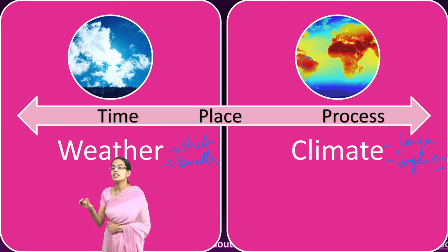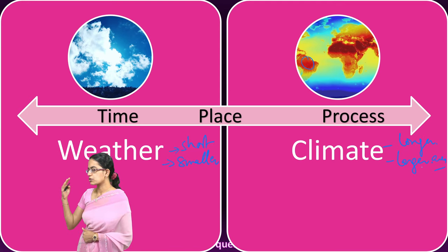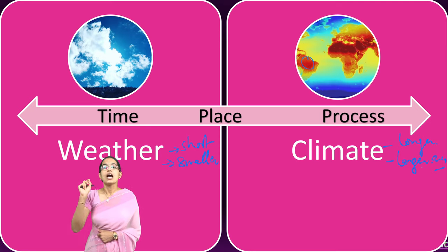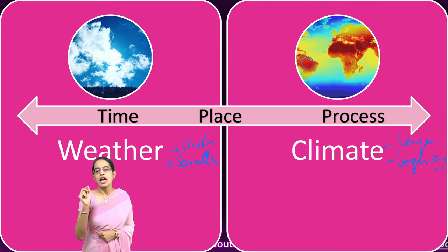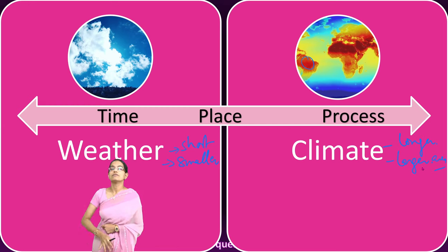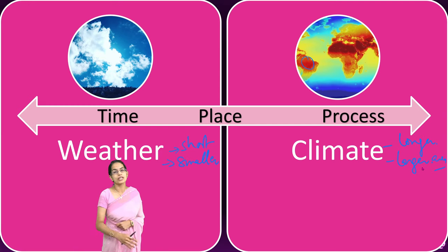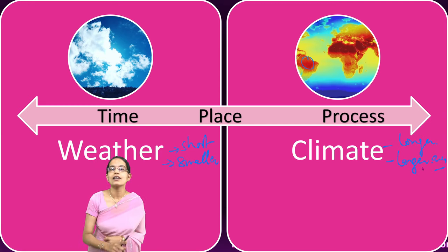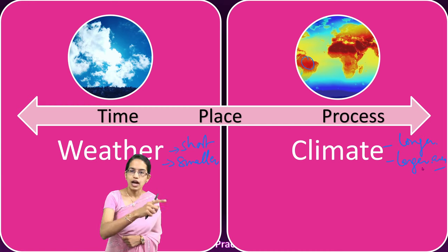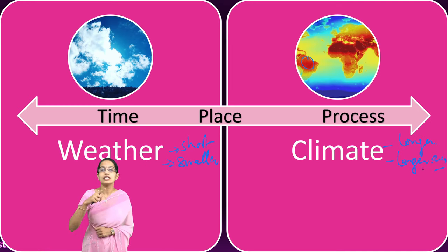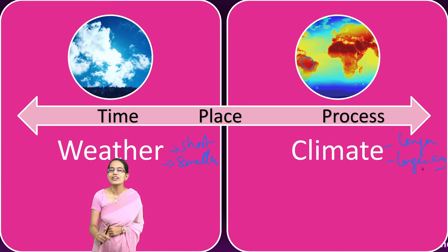Weather depends on temperature, rainfall, humidity, wind movements, and pressure conditions — all of these govern day-to-day fluctuations. Climate, however, is a long-term average of all these phenomena — temperature, pressure, wind, humidity, rainfall — taken over 20 to 30 years. Average calculations based on these give us the climate of a region. The day-to-day phenomena we see around us is not climate — it is weather. I say the weather is windy or sunny; I never say the climate is sunny outside.